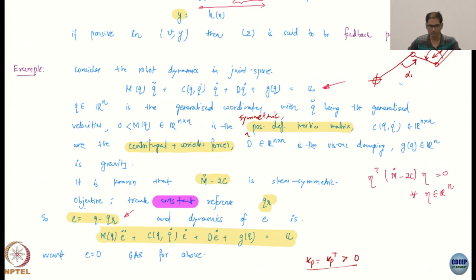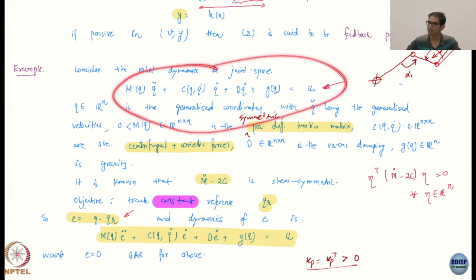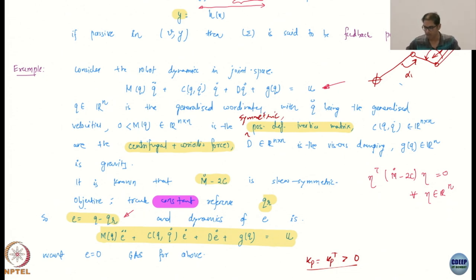In those non-holonomic cases the model looks different, because you have to have redundant variables due to the non-holonomic constraints. That is the only case where you will have a different kind of model. But otherwise, most robotic manipulators can be modeled in this form — in fact even mobile robots can be modeled in this if they are omnidirectional.